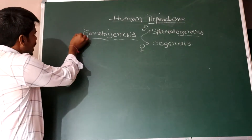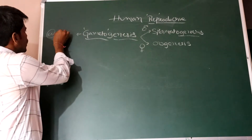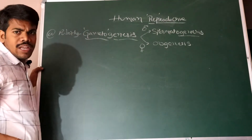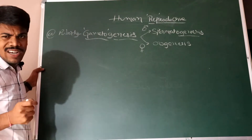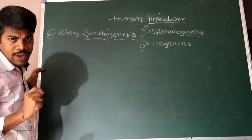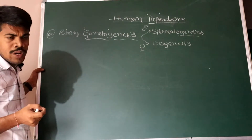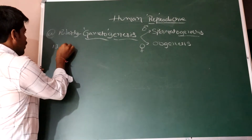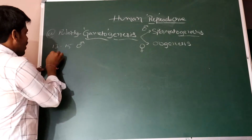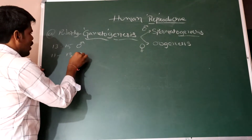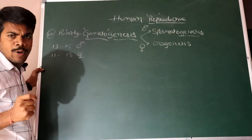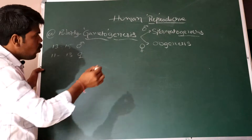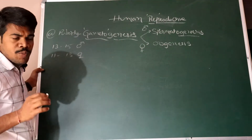Gametogenesis happens at the age of puberty, and it is different from male to female, and individual to individual. It may be from 13 to 15 years in males, and 11 to 13 years in females. So gametogenesis differs between the male and female reproductive systems.